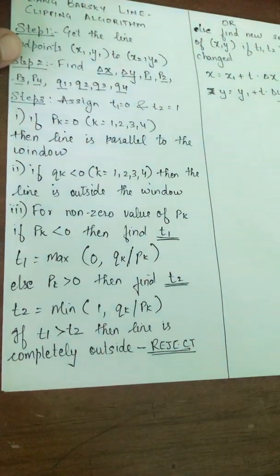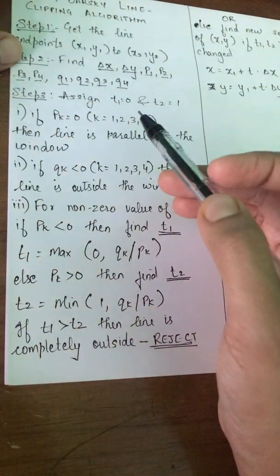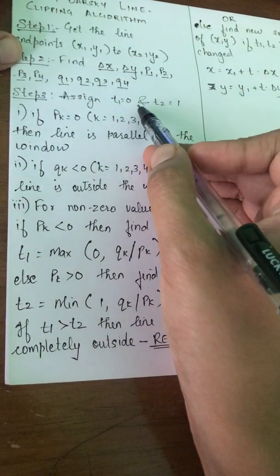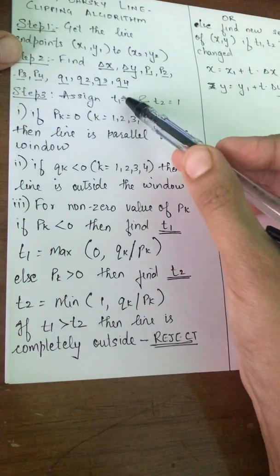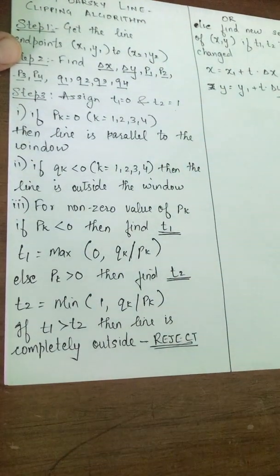Let us see the next step. Step 3 is to assign t1 equals 0 and t2 equals 1. We assume that t1 equals 0 and t2 equals 1.